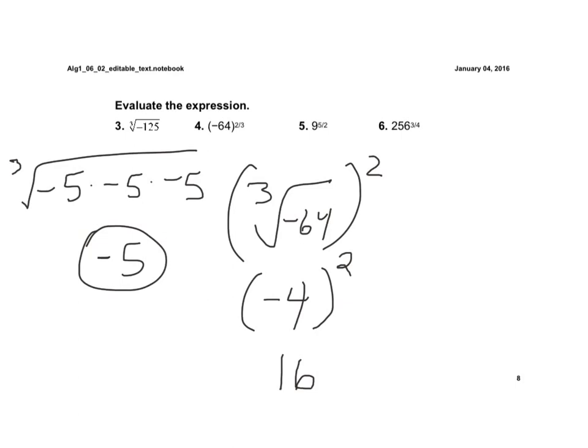Number 5, I have the square root of 9, or the square root of 9 to the fifth power. The square root of 9 is 3, and 3 to the fifth power would be 243.